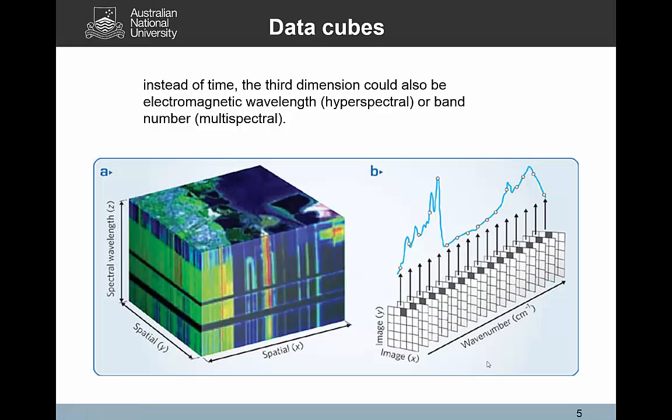It can also be the band number. For instance, with MODIS data you'll get one image or one data file per data acquisition date, and then it will have the spatial dimensions, but the third dimension will be the band number. It's the same with Landsat data, and that band number corresponds to a spectral region, of course.